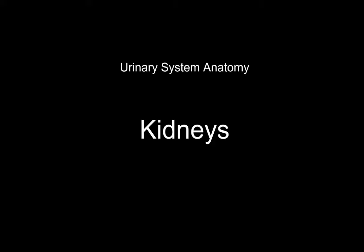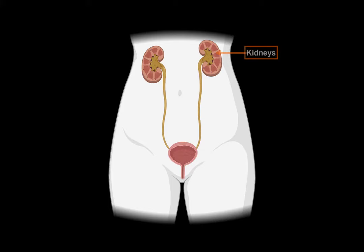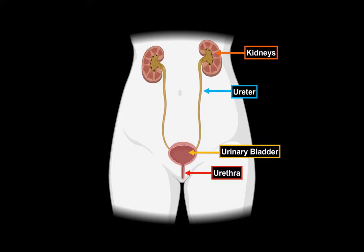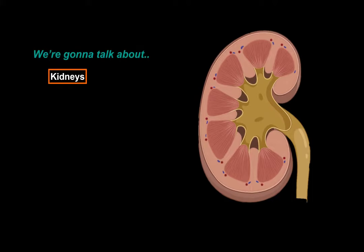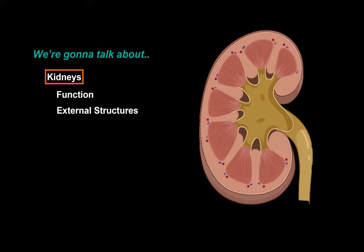Let's talk about the anatomy of the urinary system. In this segment, we will be talking about the anatomy of the kidneys. The urinary system consists of all the organs involved in handling the urine. These are the kidneys, the ureter, the urinary bladder, and the urethra. Our goal is to cover the anatomy of all the structures here, step by step, and we will start with the kidneys.